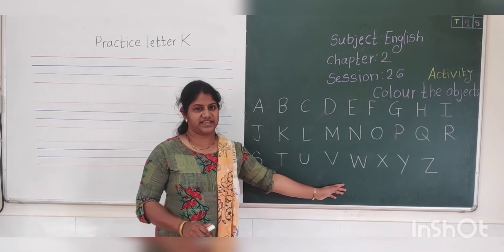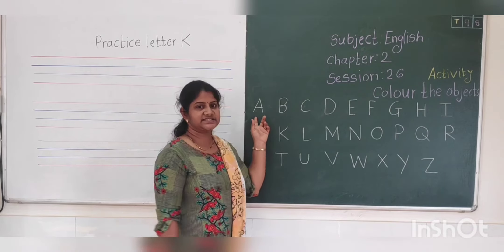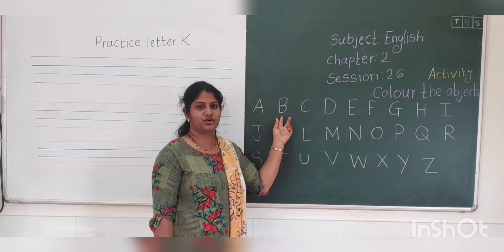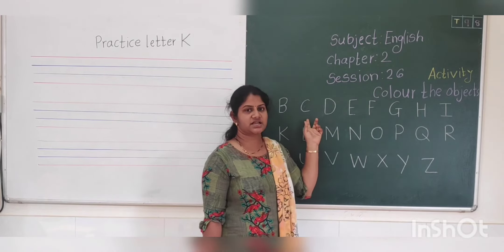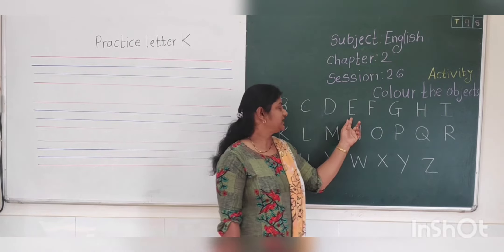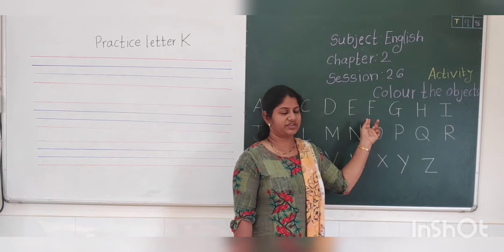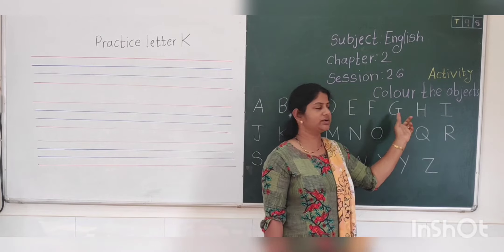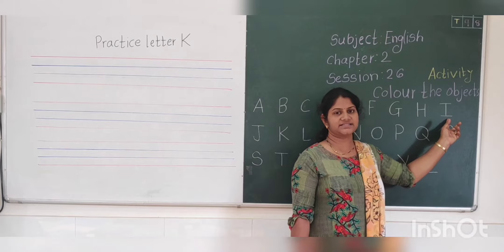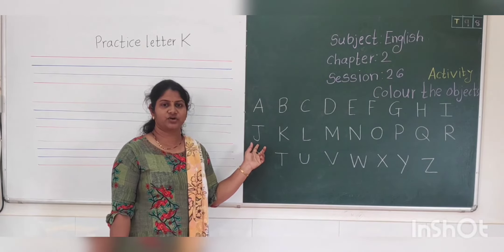Before this, A to Z. A says A for apple, B says buh, B for ball, C says cuh, C for cat, D says duh, D for dog, E says eh, E for elephant, F says fuh, F for fish, G says guh, G for goat, H says huh, H for hat, I says I, I for ice cream, J says juh, J for joker.